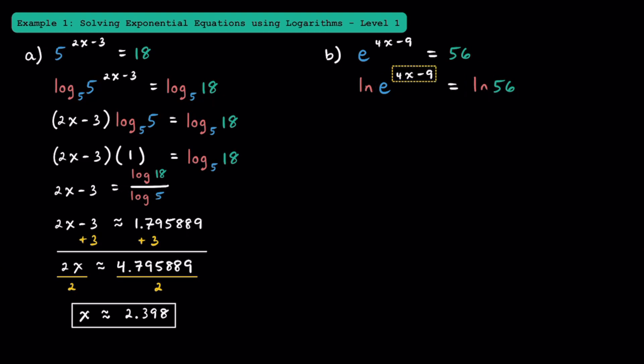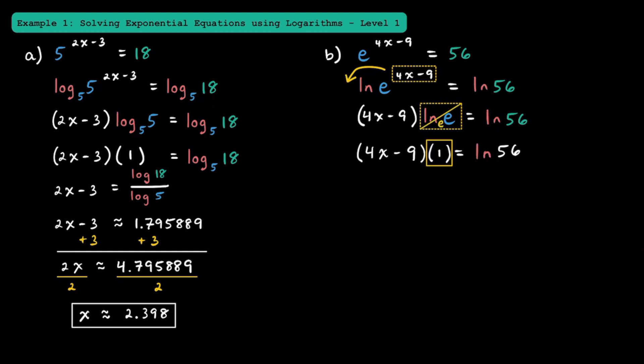Just like in the last example, once we have a logarithm, we can bring the exponent down in front to multiply by the log, and we'll have the quantity of 4x minus 9 times ln of e is equal to ln of 56. Hopefully you can now see why we took ln of both sides, because ln of e, or ln base e of e, is just equal to 1. This is helpful because we can now get rid of the e. Dropping the 1, we can say 4x minus 9 is equal to ln of 56.